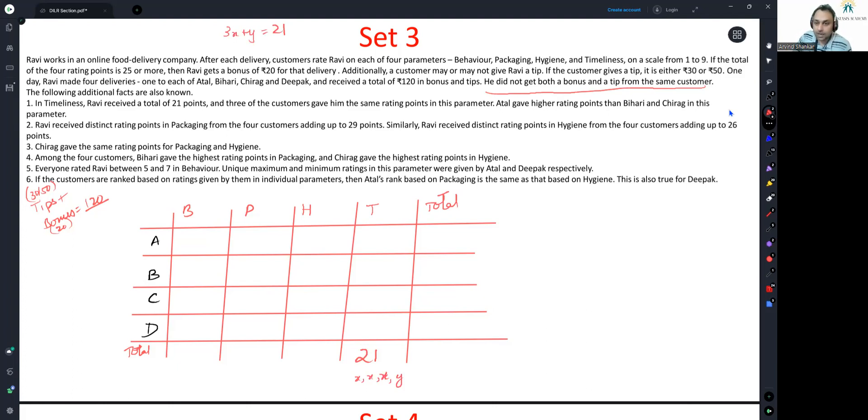Now, let's read this full point. Atal gave higher points than Bihari and Chirag in this parameter. So Y, the unequal point, of course Atal gave the unequal point here. So this has to be Y, X, X, and X. And Y has to be higher than X.